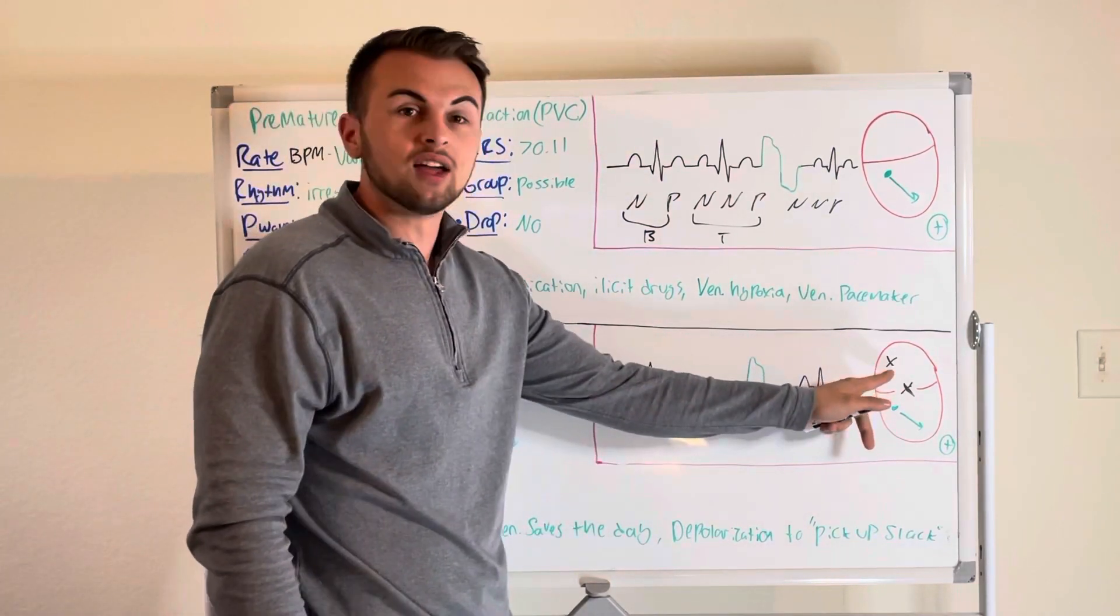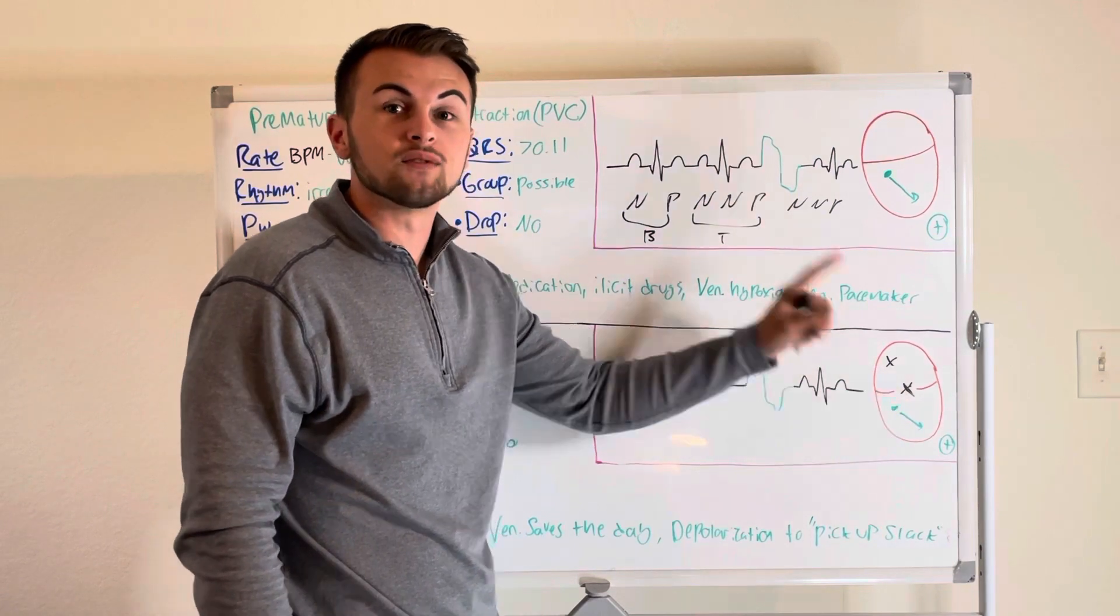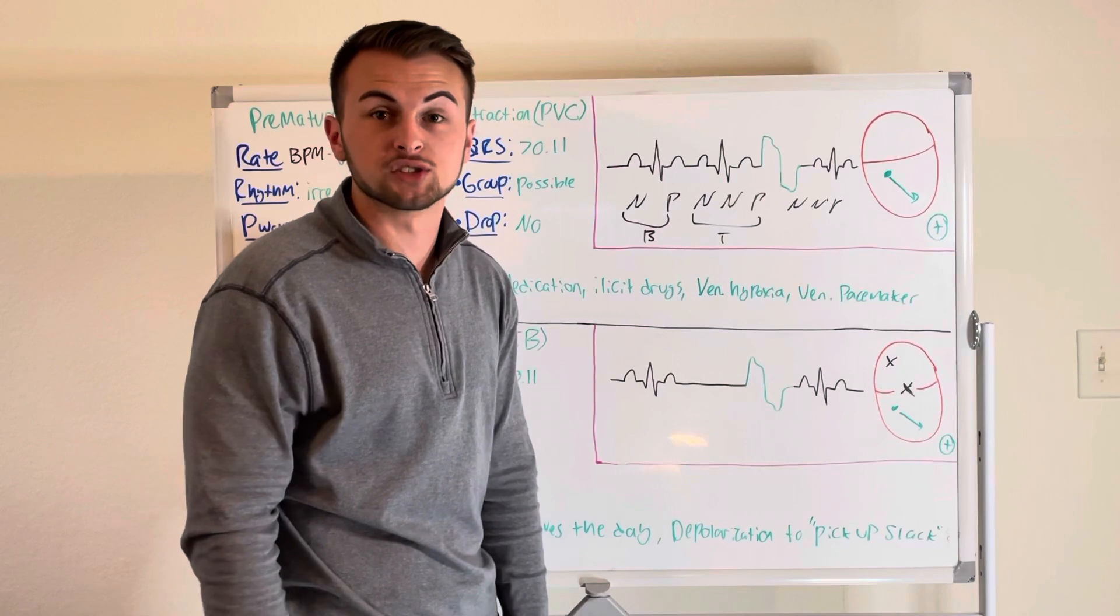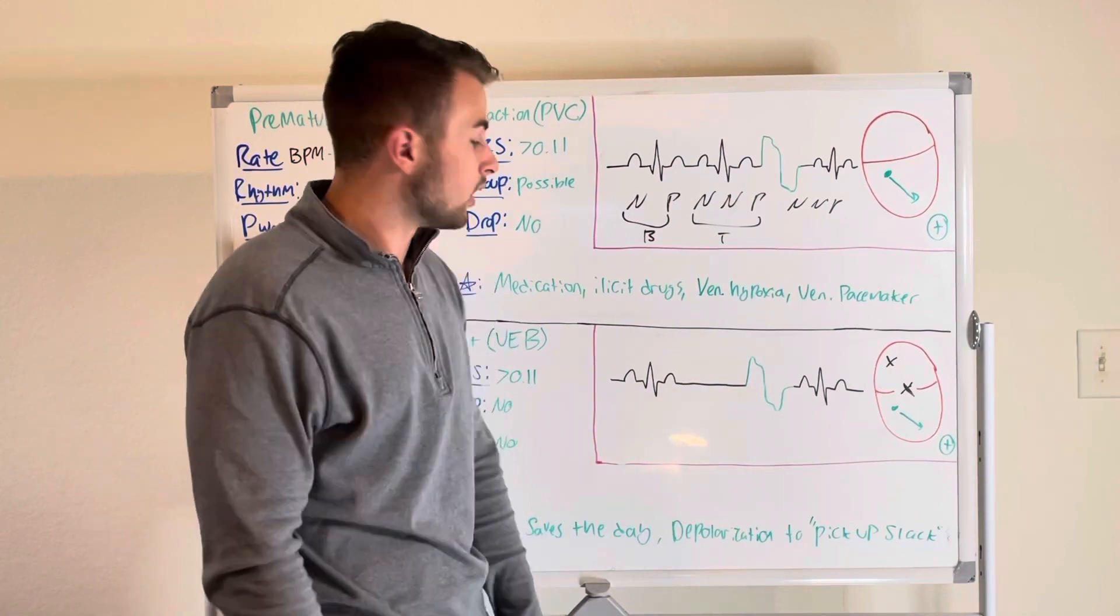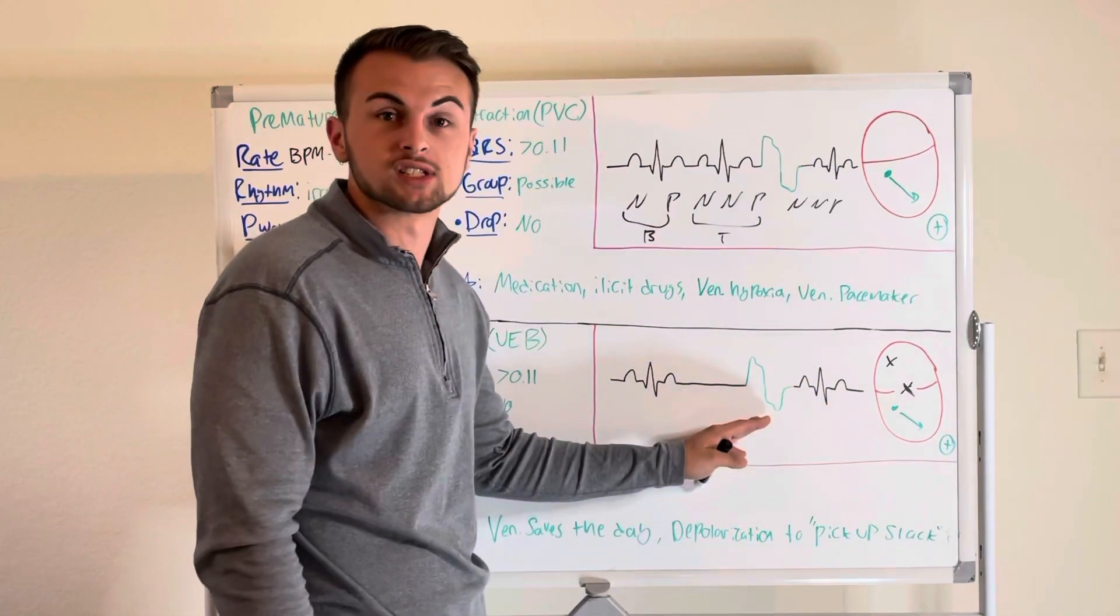So if for some reason the SA node or the AV node does not generate an impulse, the ventricular pacemaker cells, remember they can spontaneously depolarize too. They will reach their phase four threshold potential and they will fire an impulse to activate the electrical system of the heart.